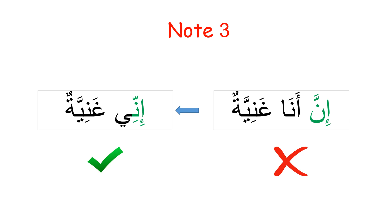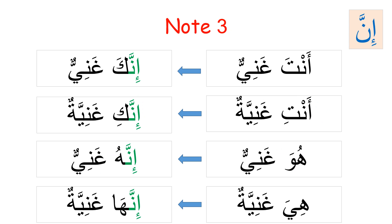Here's a skim of examples with attached personal pronouns using inna: anta ghaniyyun becomes innaka ghaniyyun; anti ghaniyyatun becomes innaki ghaniyyatun; huwa ghaniyyun becomes innahu ghaniyyun; and hiya ghaniyyatun becomes innaha ghaniyyatun.